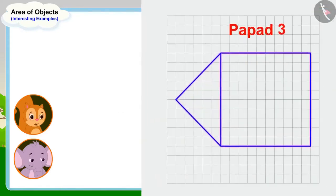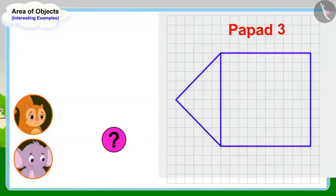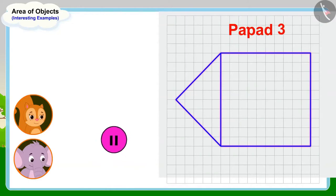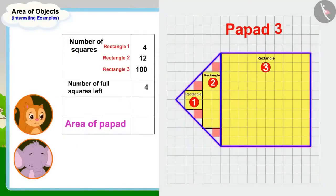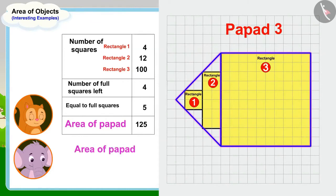Now, all they had to do was find the area of the last popper to know which is the largest. Can you help Appu and Chanda by finding the area of this popper? We can find the area by making rectangles and squares. The area of this popper is 125 square centimeters.